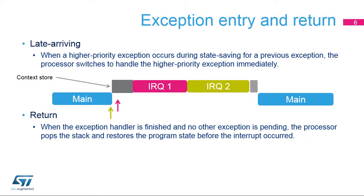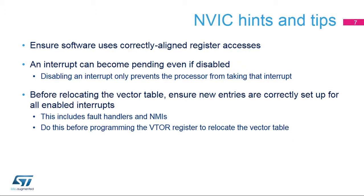When an interrupt arrives, the processor first saves the program context before executing the interrupt handler. If the processor is performing this context saving operation when an interrupt of higher priority arrives, the processor switches directly to handling the higher priority interrupt when it finishes saving context. Then tail chaining is used prior to executing the IRQB interrupt service routine. When all exception handlers have been run and no other exception is pending, the processor restores the previous context from the stack and returns to normal application execution.